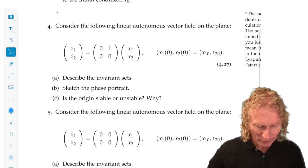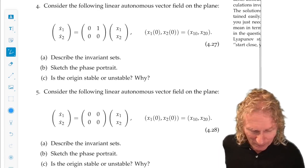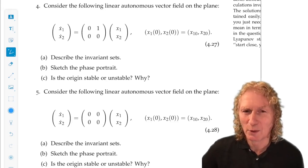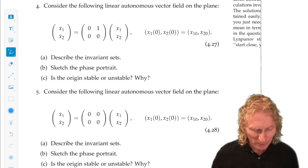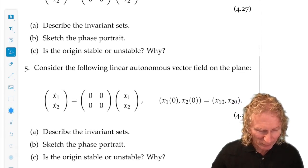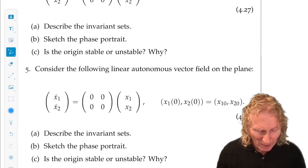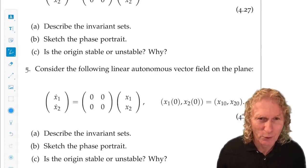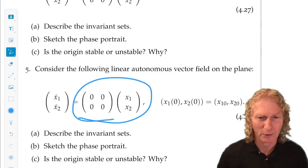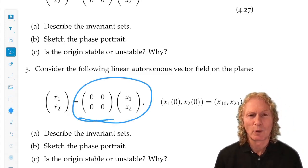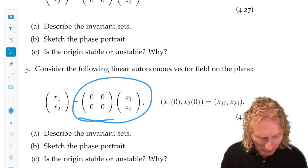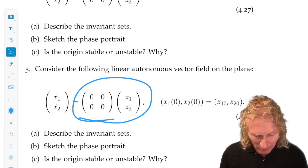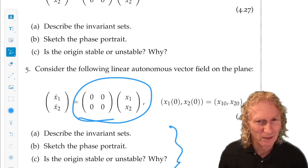Okay, I love these last two questions to give to students. A little bit devious. They're easy questions. But this is a good example - you look at it first and think, oh, that's got to be hard. So let's look at number five first: x1 dot equals zero, x2 dot equals zero. I just wrote it as a matrix equation. Describe the invariant sets. Sketch the phase portrait. Is the origin stable or unstable? Why? Well, if you just read those questions, you'd think this is going to be a hard problem. It's simple.